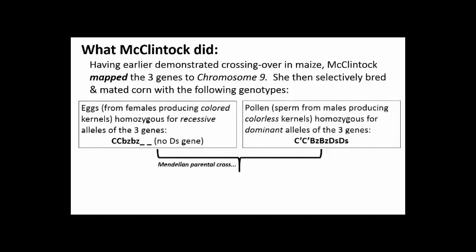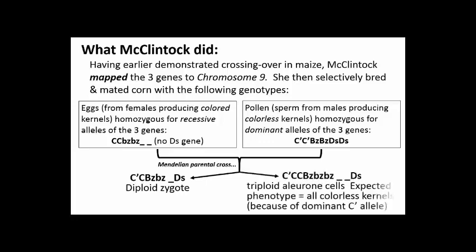Here's the cross. The triple recessive female and triple dominant male parental genotypes are shown here, and here are the expected genotypes of the progeny. The expected embryonic genotype of the progeny is shown at the left on this slide, and those of the aleurone cells are shown at the right. Remember that the aleurone genotypes are against a triploid, not a diploid background — hence the extra components of the genotype. What's amazing is that McClintock was following not one, not two, but three genes against this triploid background.